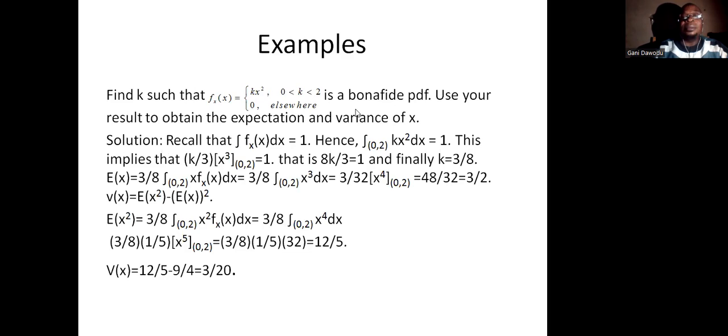We have the example here. Example says: find K such that this is a bonafide PDF. When will it be a bonafide PDF? Mind it, this function here will always be in the interval zero to one. And when you integrate over it, it should be equal to one. So we're going to integrate over this function now in the interval specified, zero to two, and we equate it to one. So we can easily get the K that will make it equal to one. After you do that and you get it to be three eighths, put it there and you can now get your expectation and variance easily. Read through this, self-explanatory.